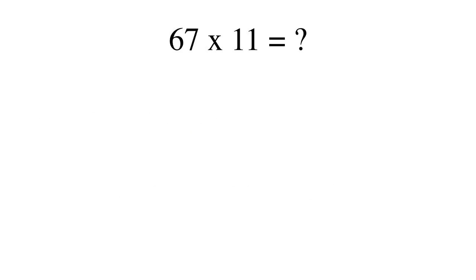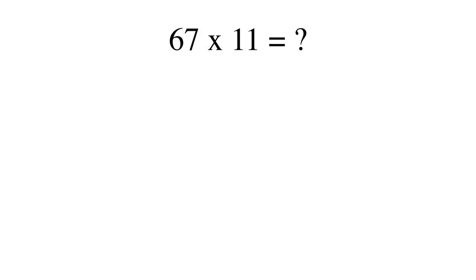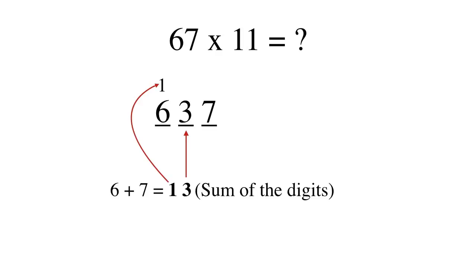Let's try another example. 67 times 11. We write 6 and 7 with a space between them. The sum of the digits is 13. So we write 3 in the middle and carry over 1. Adding the carry over, we get 737 as the answer.